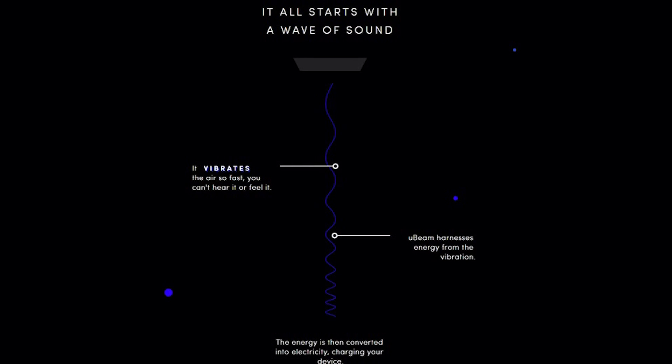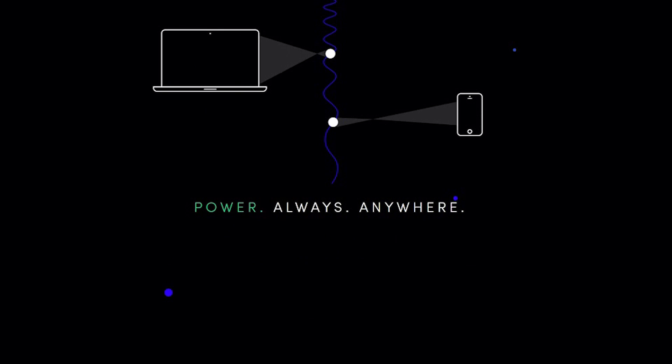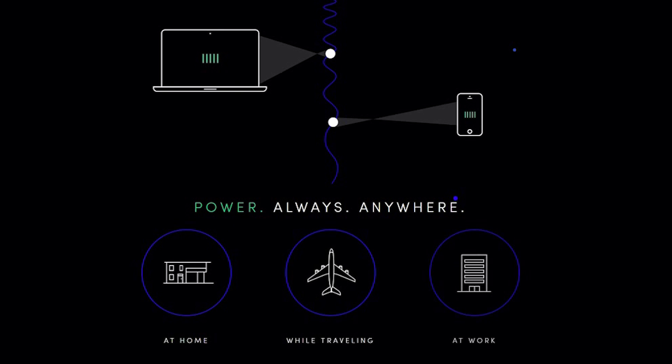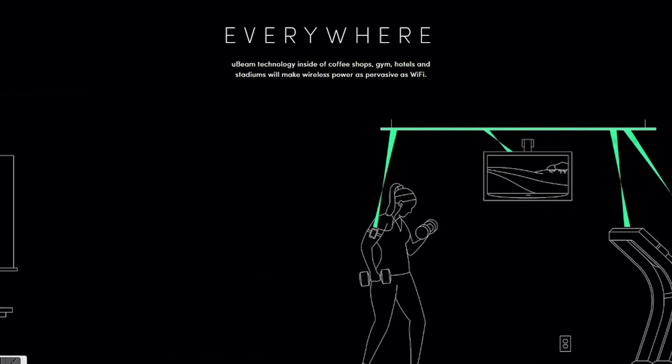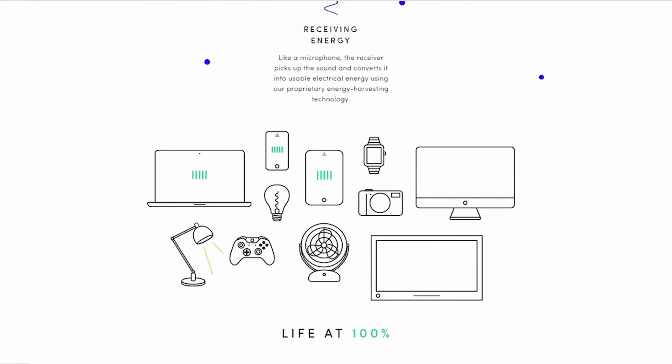Over-the-air charging is also possible thanks to U-Beam. It uses ultrasound to transmit electricity. Power is turned into sound waves, inaudible to humans and animals, and then transmitted and converted back upon reaching the device.